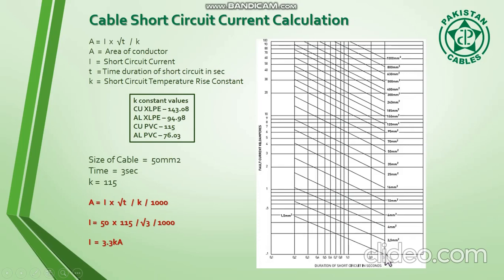We move to the y-axis and then we move to the 50mm² cable. This is 25, and there is the 50mm² cable. Here is the intersection point — this is basically our focal point. Then we move to the x-axis.